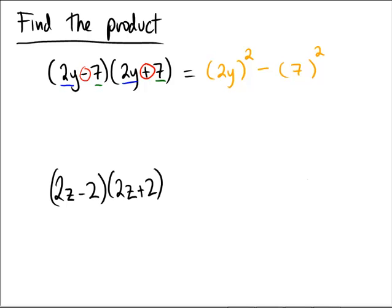Essentially the reason for this is the first term is going to come from here, the 2y times the 2y, and the last term is going to come from the 7 times the 7. The fact that one is plus and one is minus means that when you multiply these two pieces out they're going to cancel.